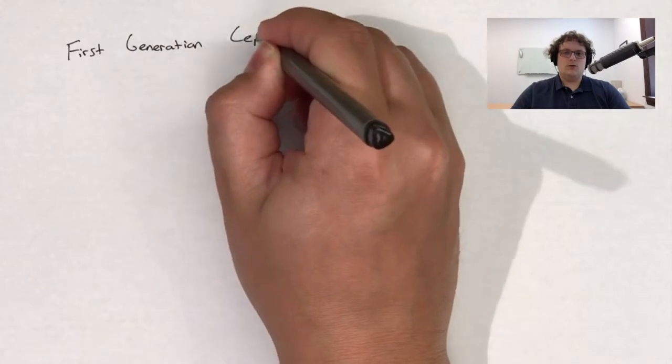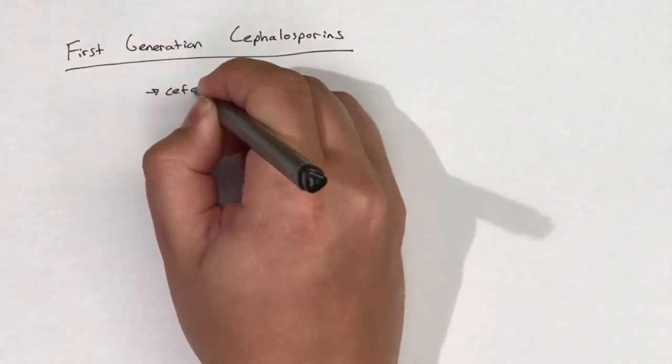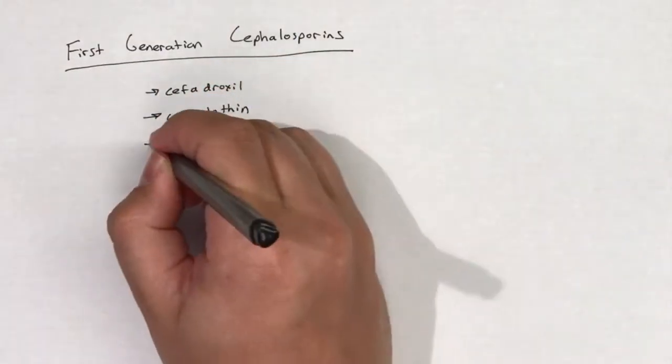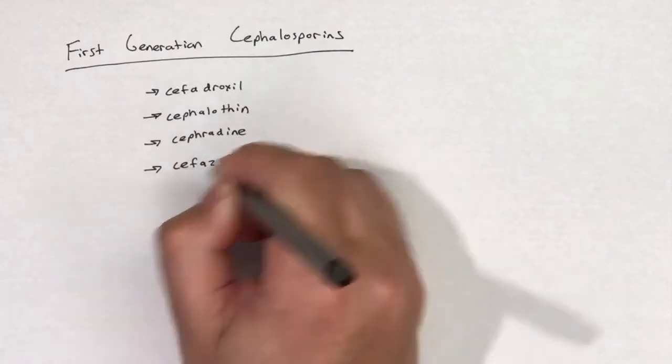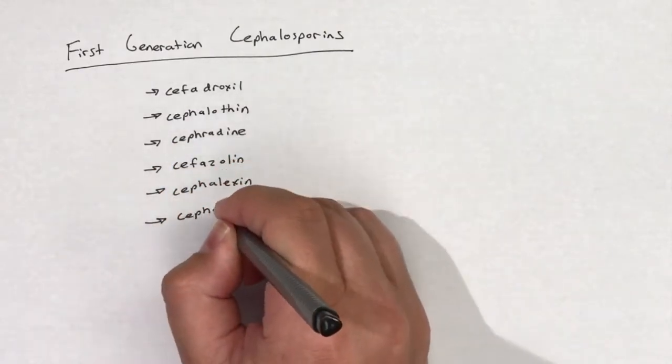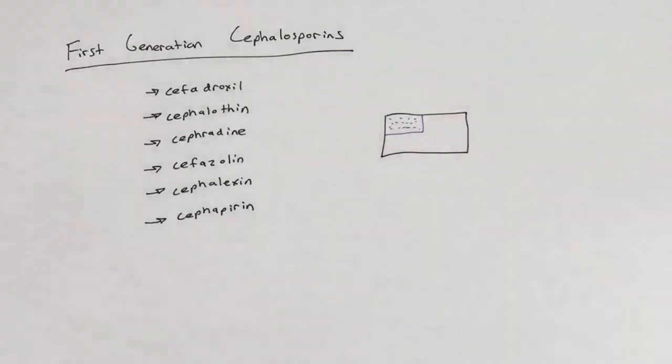First-generation cephalosporins include several drugs: cefadroxil, cephalothin, cephradine, cefazolin, cefalexin, and cefapirin.